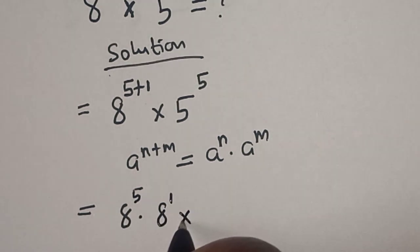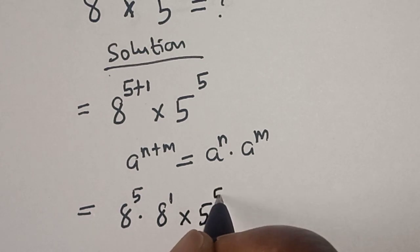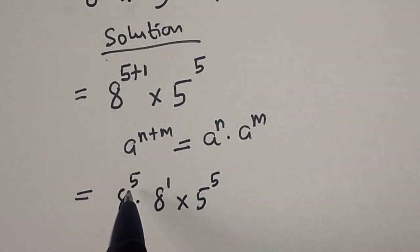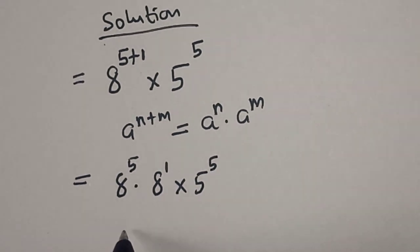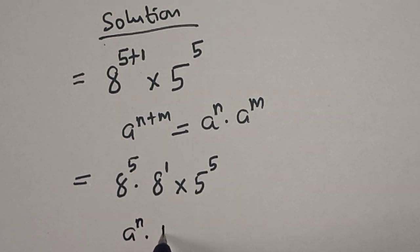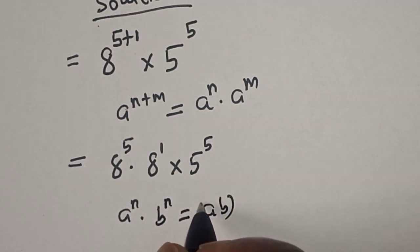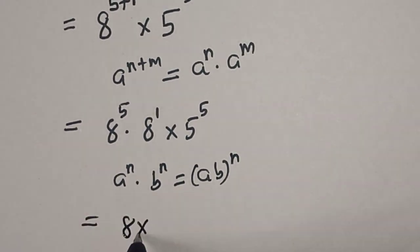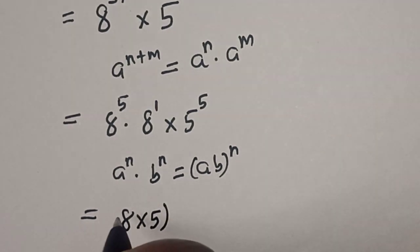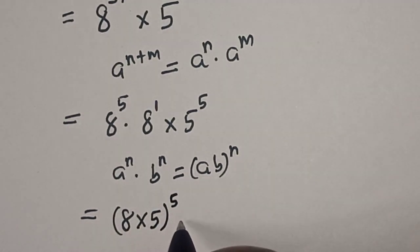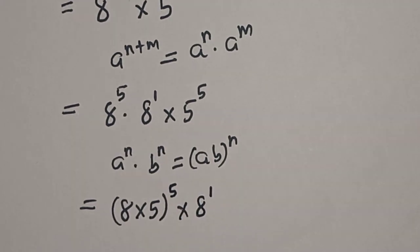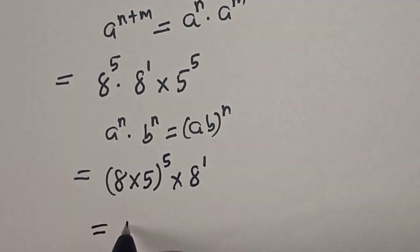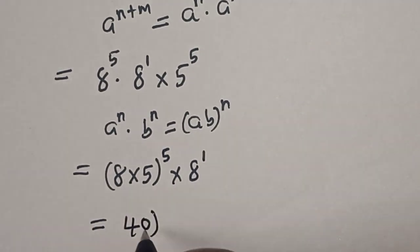This is equal to 8 to the power of 5 multiplied by 8 raised to power 1, then multiplied by 5 to the power of 5. Now this is power of 5 and this is also power of 5. If you have a raised to power n multiplied by b raised to power n, this is equal to a times b to the power of n. So we have 8 multiplied by 5 to the power of 5, multiplied by 8 raised to power 1.